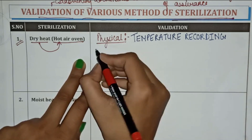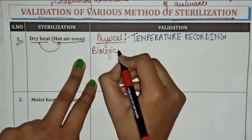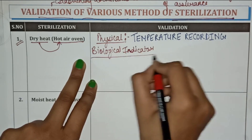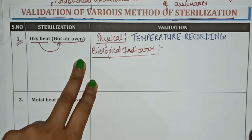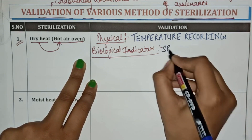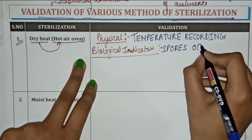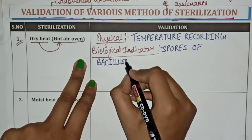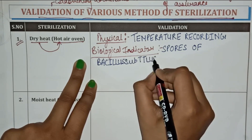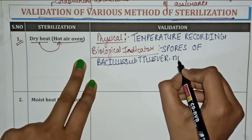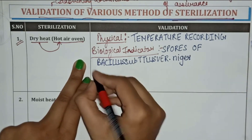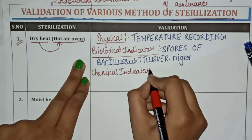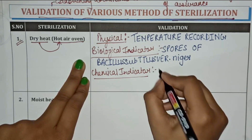The biological indicators used in validation of dry heat sterilization are spores of Bacillus subtilis var. niger. The chemical indicator that is used is the Brownie tube.